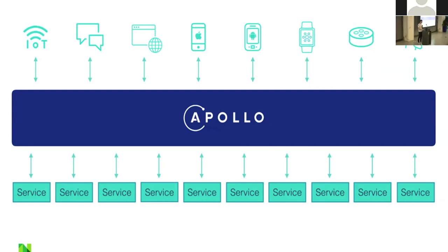By doing this, some clients can continue to talk to the old back-end services, and we can start to pick what we want to migrate into the GraphQL layer. We get to leverage a lot of the technology that already exists in our service stack without rebuilding anything. For instance, our access control and identity system doesn't need to change — the client simply passes access tokens into the GraphQL layer, which passes them through to the back-end REST services it speaks to.